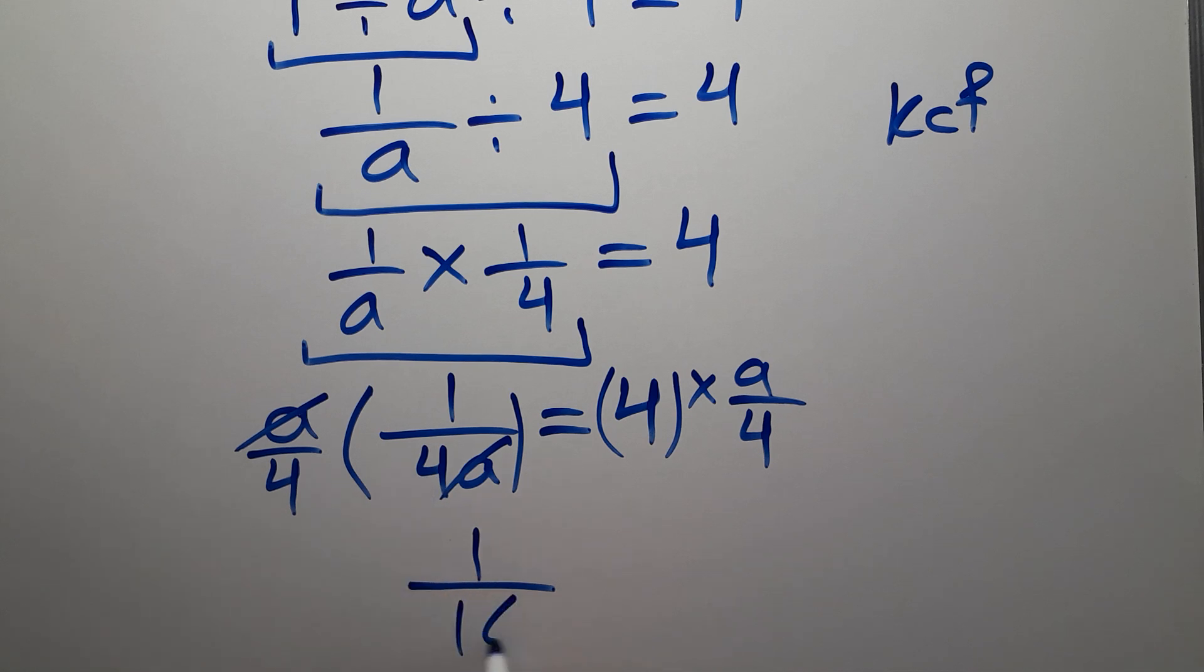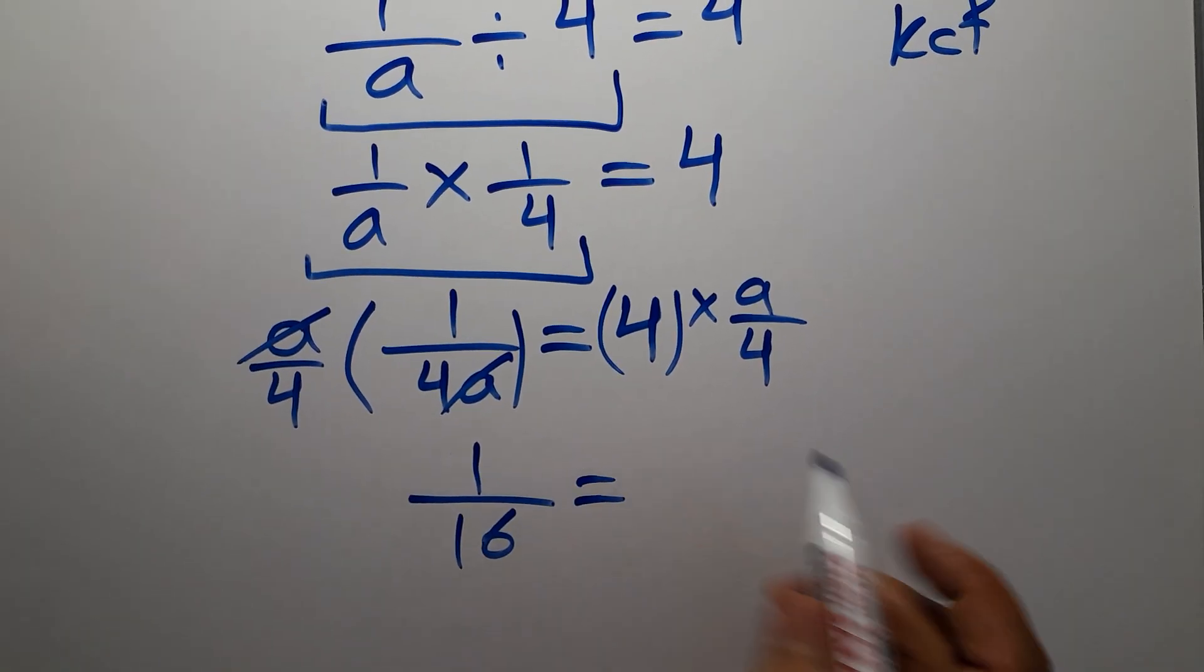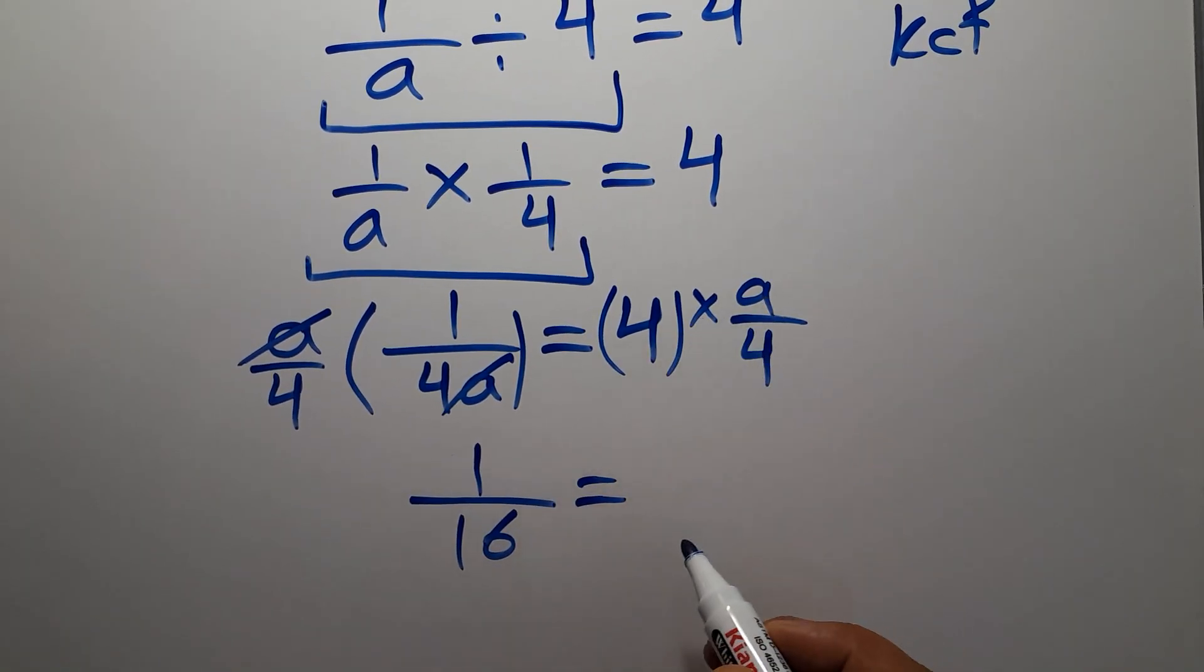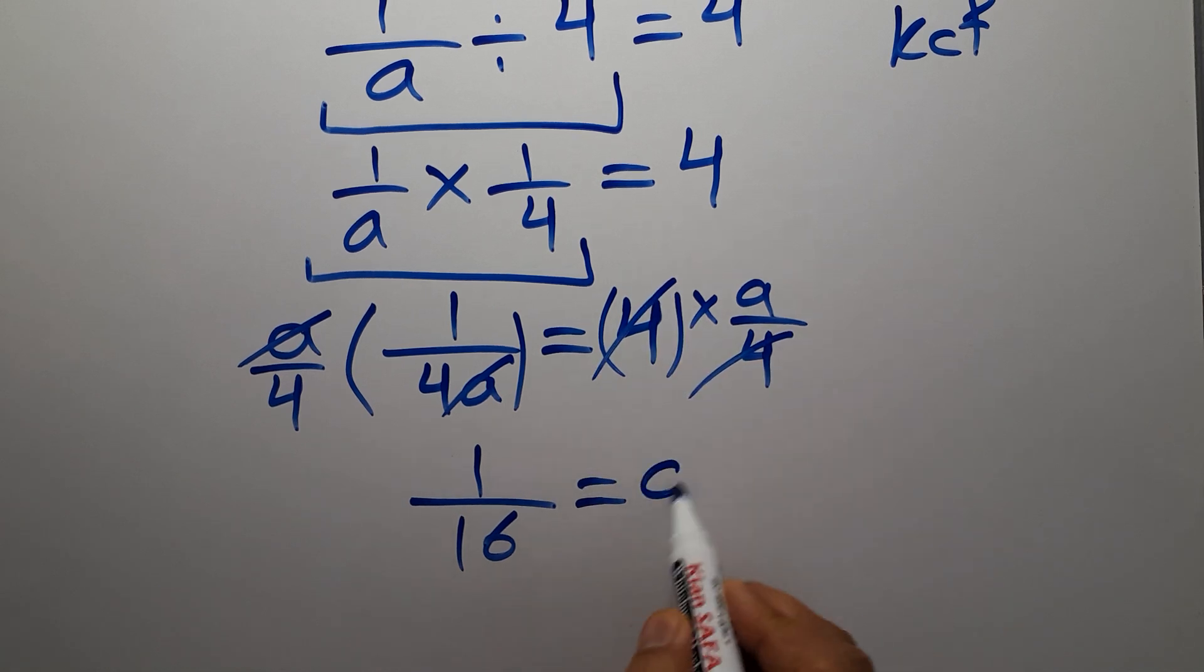So 1 over 16 equals... On the right hand side we have 4 times a over 4. We can easily cancel this 4 and this 4, so we have just a.